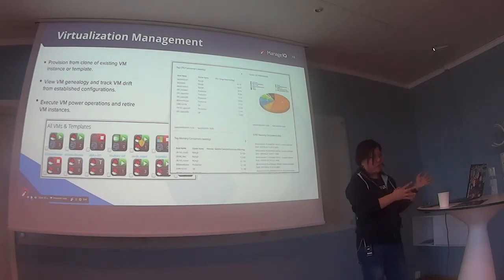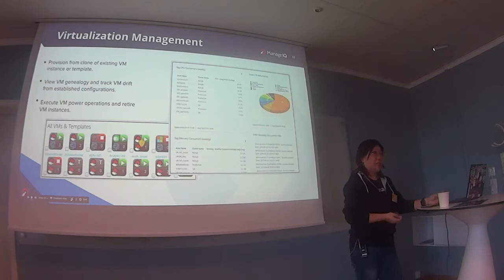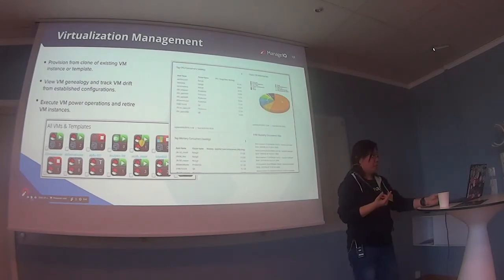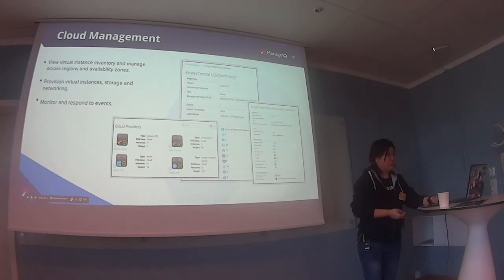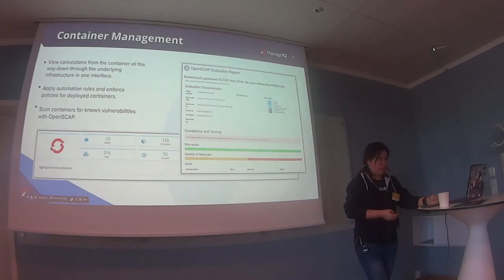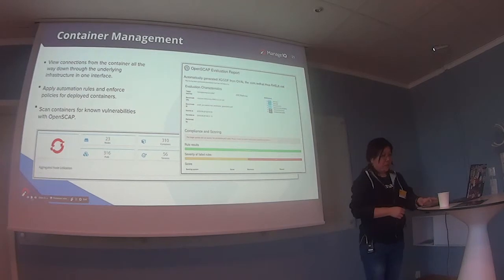All these features — resource tracking, policy-based compliance checks — can be applied across different platforms. We have traditional virtualization environments like VMware, Microsoft Hyper-V, and oVirt, which is the upstream for Red Hat Enterprise Virtualization. We have cloud platforms: Amazon, Google Cloud, Microsoft Azure. And for the hot topic of containers, we have container management through OpenShift with advanced container scanning capabilities, making systems secure through OpenSCAP.